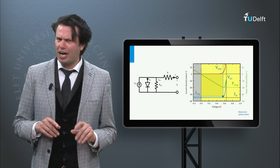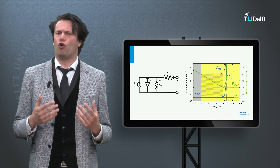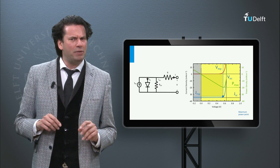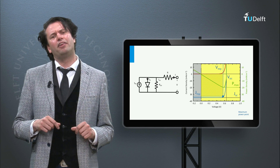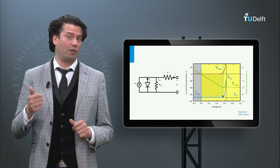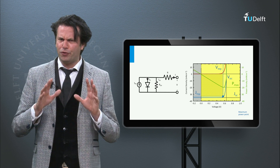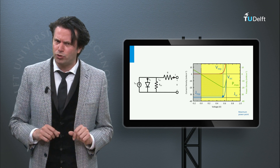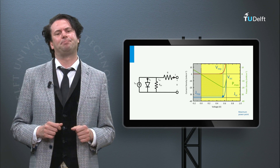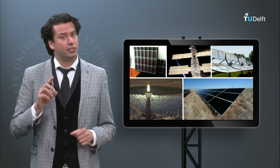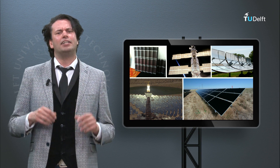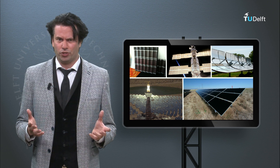In this first block I would like to give you a short overview of the course. The course can be divided in three major parts. The first part, week 1 up to 3, covers the fundamental physical principles on which the solar energy technologies are based. The second part, week 4, 5 and 6, discusses all solar energy technologies.